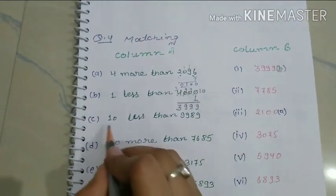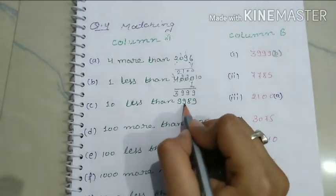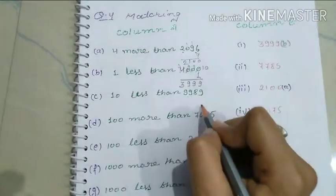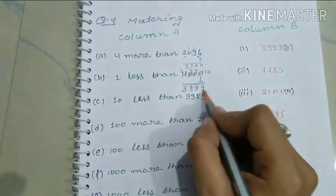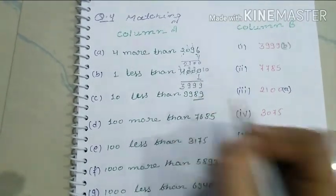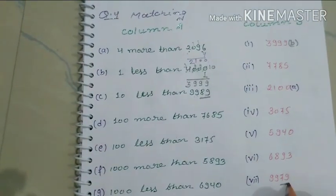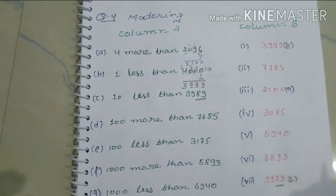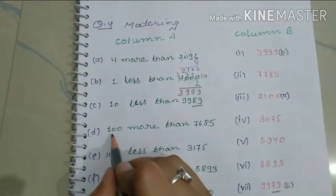Next: 10 less than 9989. Since 10 less than 89 is 79, the answer is 9979.